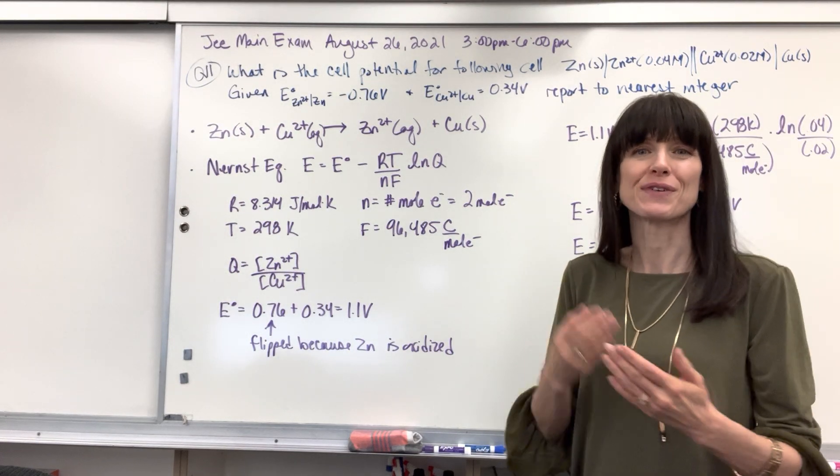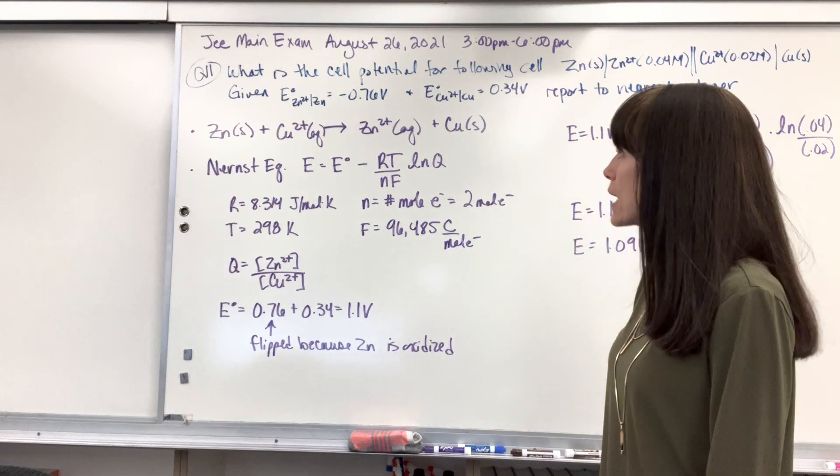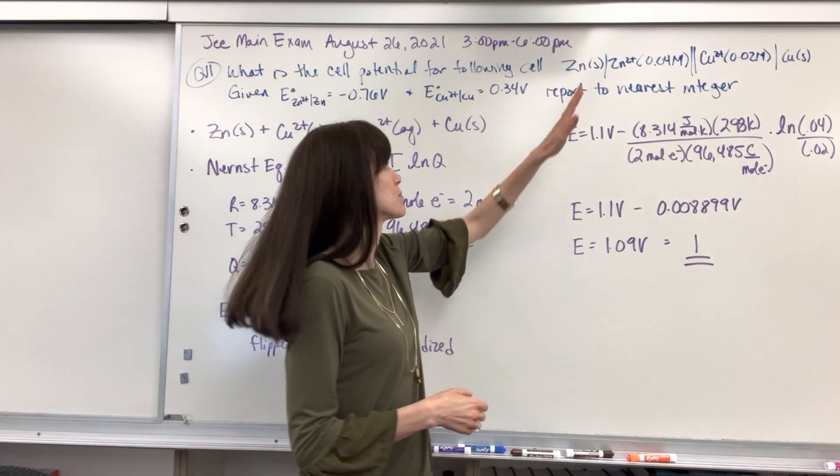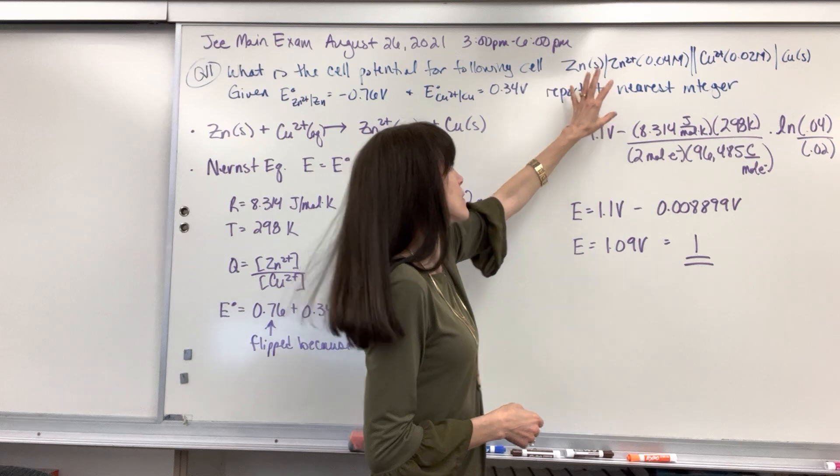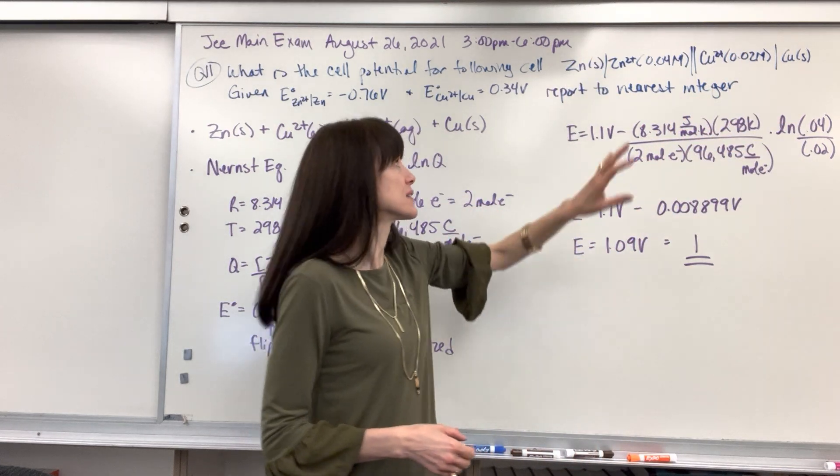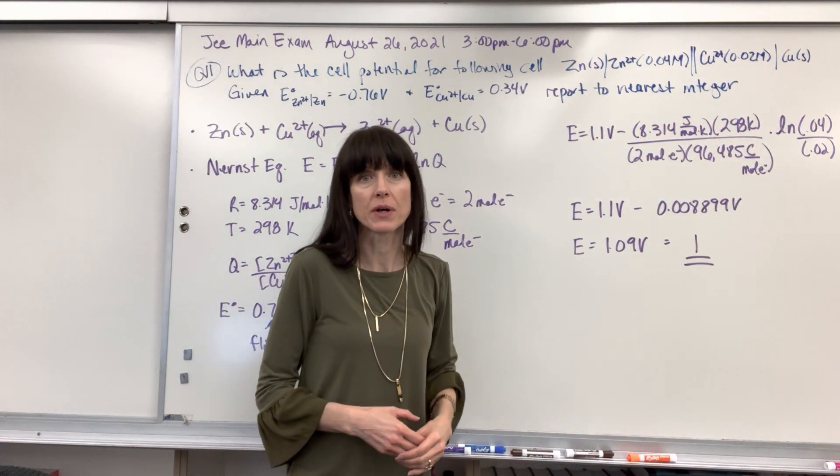So a couple of things to write down. Let's first figure out what is this reaction, what's this electrochemical reaction? Interpreting this, remember we always write the reactant then the product, and you always write the anode and then the cathode. The anode is what's oxidized, that's going to be the zinc. The cathode is what's reduced, that's going to be the copper.